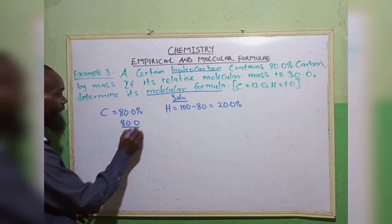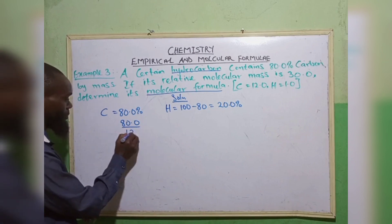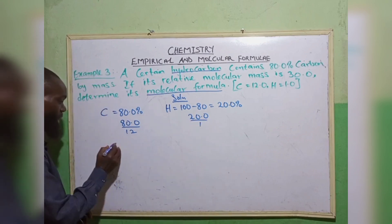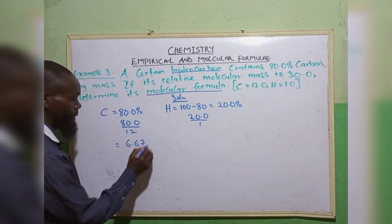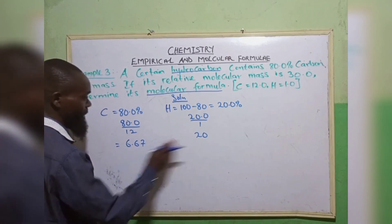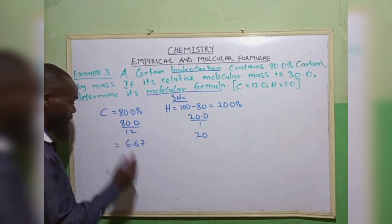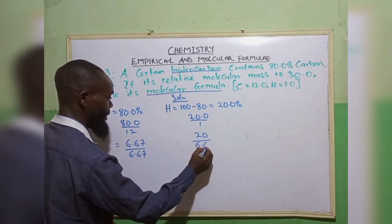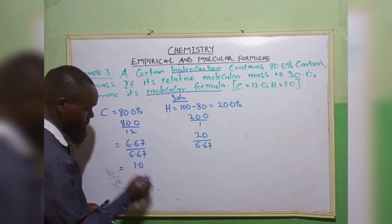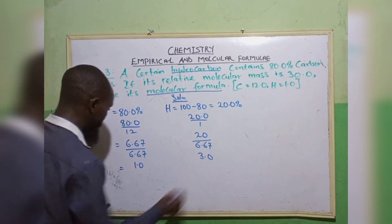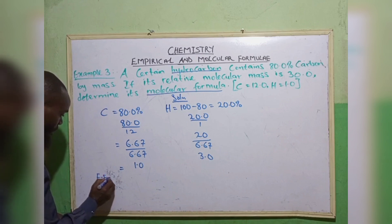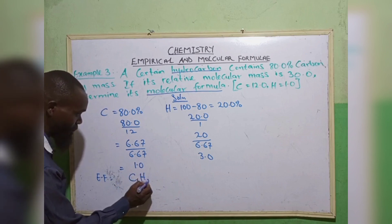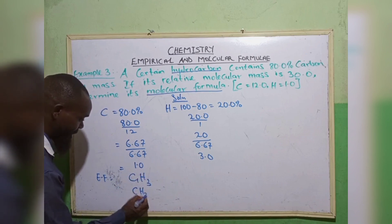Carbon contains 80.0%, and hydrogen will now be 100 minus 80, which gives 20.0%. We find our empirical formula first by dividing both by their atomic masses: 80.0 divided by 12 for carbon, and 20.0 divided by 1 for hydrogen. We have 6.67 and 20. Dividing by the smallest number 6.67, we have 1.0 and 3.0. So the empirical formula is CH₃.